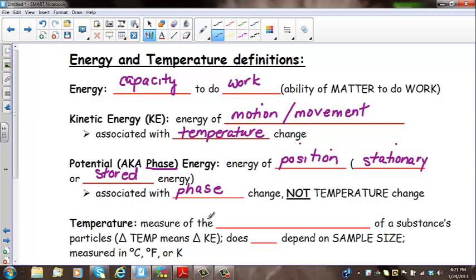And the last big vocabulary word is temperature. Temperature is a measure of the average kinetic energy of a substance's particles. This symbol right here, the triangle, means delta, if you haven't seen that before, D-E-L-T-A, and that's equivalent to change. So when you see delta temp, or delta T, that's change in temp. Delta K-E is change in kinetic energy. It does not depend on sample size. And this change is measured in Celsius, Fahrenheit, or Kelvin.